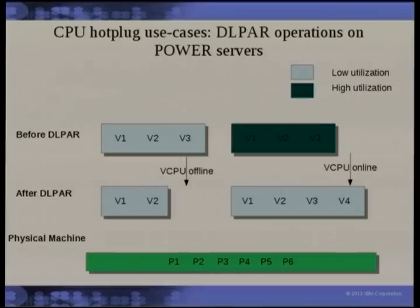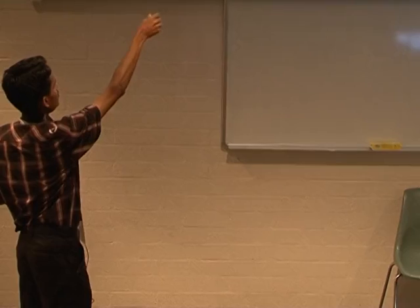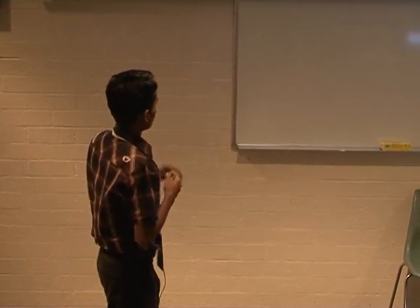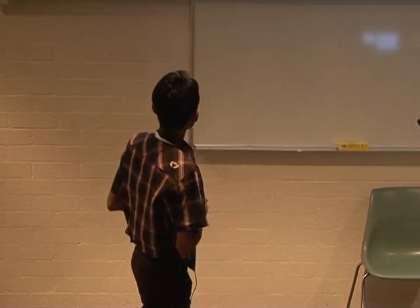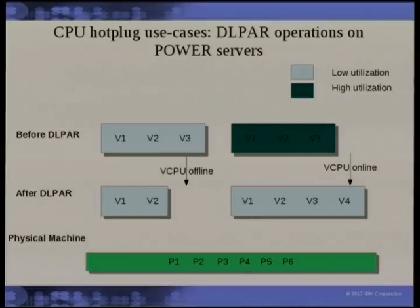DLPAR operations on Power systems: a physical machine has processors P1 to P6 and virtual server instances. Before DLPAR, two virtual server instances exist — one lightly loaded, one heavily loaded. Virtual CPUs map to physical CPUs. You can do a vCPU offline on the first virtual server and bring a new CPU online there to distribute load properly and achieve better hardware utilization. This is guest CPU hotplug rather than host CPU hotplug.